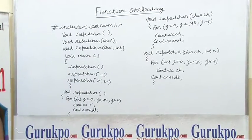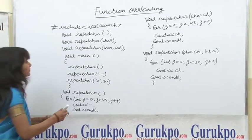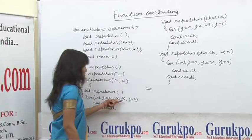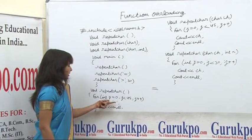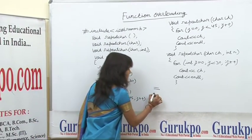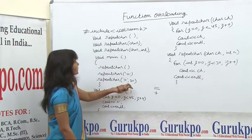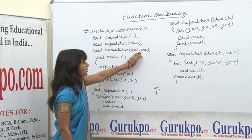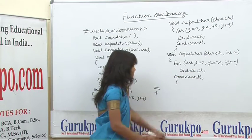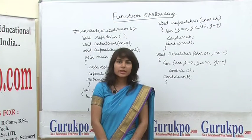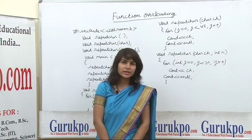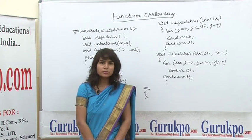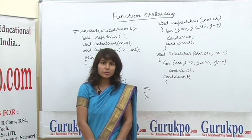The output of these functions: the equals sign is displayed 30 times, the plus sign is displayed 45 times, and the character is displayed 30 times. Thank you for watching this video. For more details please visit www.gurukpo.com. Thank you.